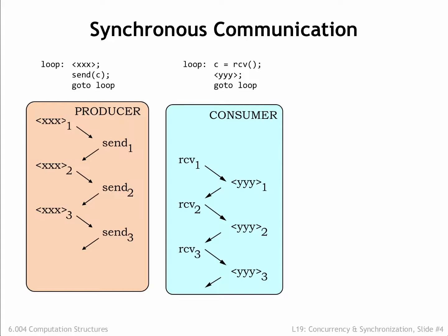Let's look at a timing diagram for the actions of our simple producer-consumer example. We'll use arrows to indicate when one action happens before another. Inside a single process — for example the producer — the order of execution implies a particular ordering in time. The first execution of XXX is followed by the sending of the first character. In later examples, we'll omit the timing arrows between successive statements in the same program. We see a similar order of execution in the consumer: the first character is received, then the computation YYY is performed for the first time, and so on. Inside each process, the program counter determines the order in which computations are performed.